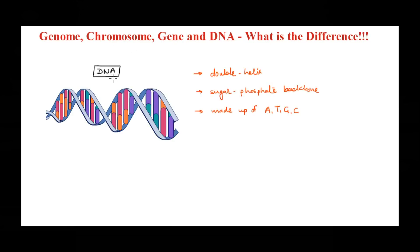We'll start with DNA because all of us will know the basic structure of DNA. It's a double helix structure, it has a sugar-phosphate backbone in it, and it is made up of four nucleotides: adenine, thymine, guanine, and cytosine. Adenine pairs with thymine, guanine pairs with cytosine.